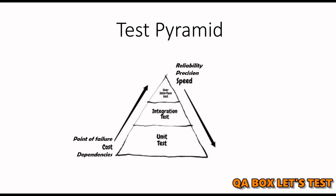The advantage of having more test cases at the unit level is that the cost of fixing bugs is lower, because there are fewer dependencies and therefore fewer points of failure. As we go up the pyramid, the points of failure increase and the cost of fixing bugs increases because dependencies are increasing. In terms of speed, unit test cases are faster compared to UI testing, and hence reliability and precision go down as we move from bottom to top.